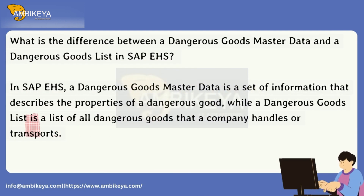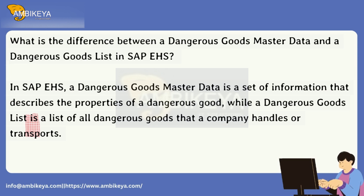What is the difference between a dangerous goods master data and a dangerous goods list in SAP EHS? In SAP EHS, a dangerous goods master data is a set of information that describes the properties of a dangerous good, while a dangerous goods list is a list of all dangerous goods that a company handles or transports.